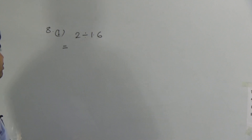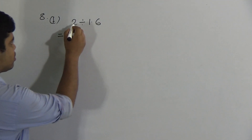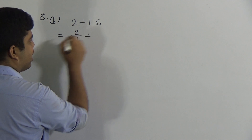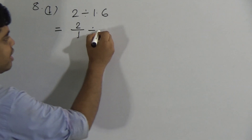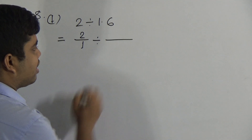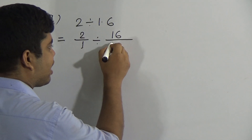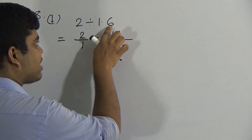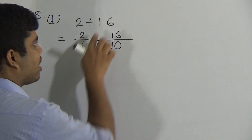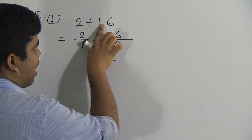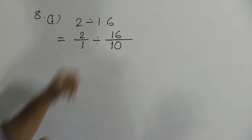We know every number has a denominator which is 1. So we write 2 as 2/1, divided by — and this decimal number, we write as a fraction. First draw a fractional sign, then write 16 without the decimal point. For this decimal point I write 1, and after the point there is 1 digit, so we write 10. Therefore 1.6 as a fraction is 16/10.